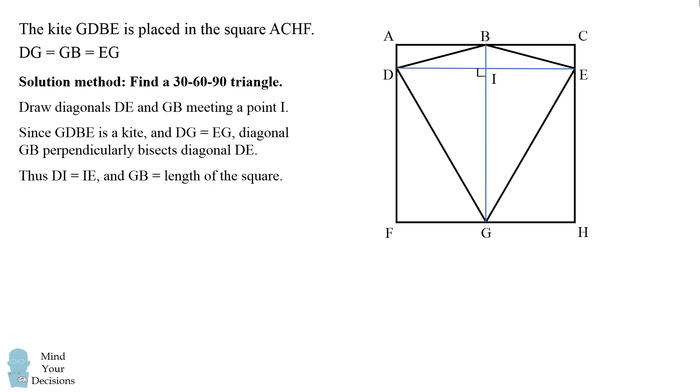Therefore, DI is equal to IE, and GB is equal to the length of the square. But since DE is also the length of the square, we can conclude that the sides DG and GB and EG will equal twice DI and twice IE.